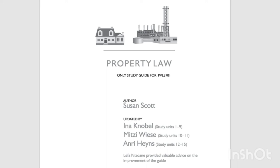Negotiable things (res in commercio) may be either someone's property (res alius) or no one's property (res nullius). In the latter instance, anyone can claim ownership of them by means of appropriation. We therefore distinguish between: first, res alius — things belonging to an owner and forming part of his or her estate; or secondly, res nullius — things that are susceptible of ownership but that belong to no one at a particular stage, for example, wild animals or fish, or a thing that has been thrown away by its owner who no longer intends to be the owner (res derelictae).